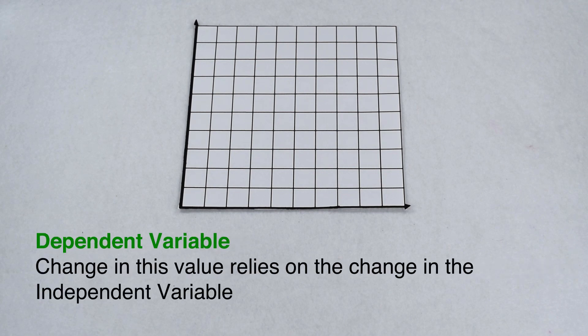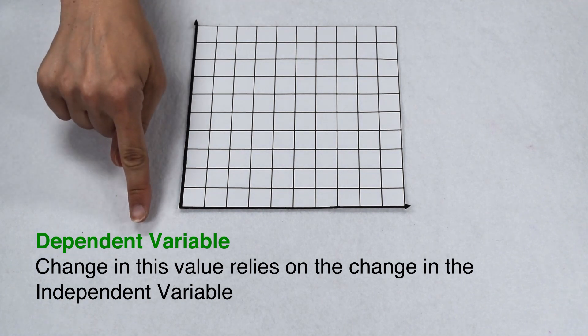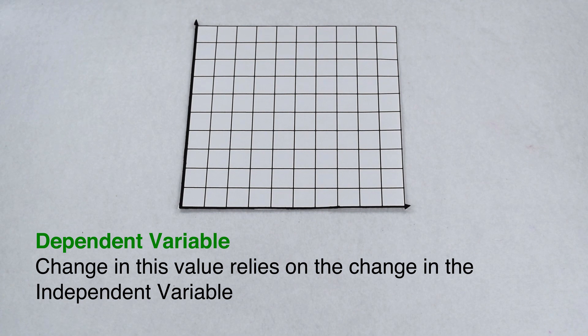The dependent variable, on the other hand, is one that depends on or relies on the independent variable. We would plot the data for our dependent variable on our y axis.